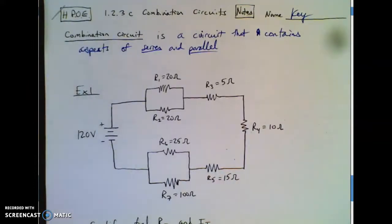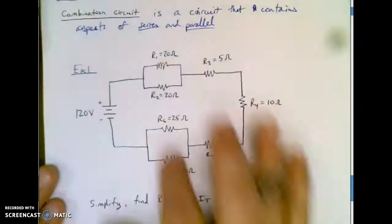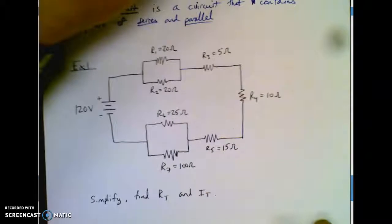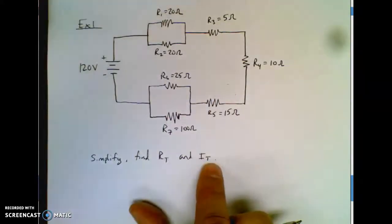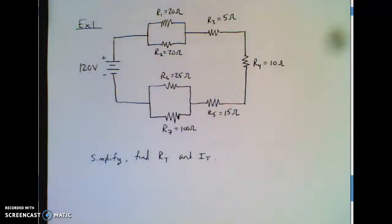And the issue with that is the rules keep switching on you. So what we're going to do with this first one, all we're going to do is try to simplify this picture and find RT and IT. There's a lot more things we could find, but I'm trying to take it easy here on the first one and just teach you how to make it more simple.